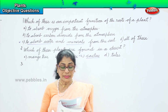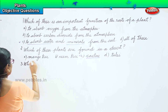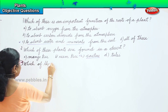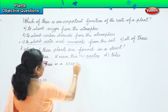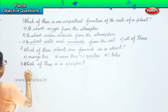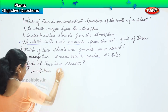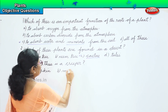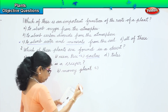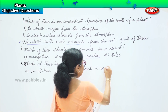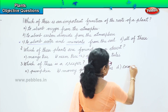The third question: which of these is a creeper? Option A: pumpkin. Option B: money plant. Option C: orange. Option D: coconut tree.